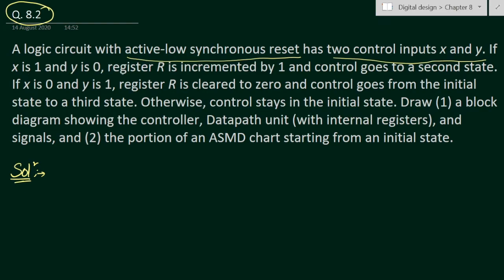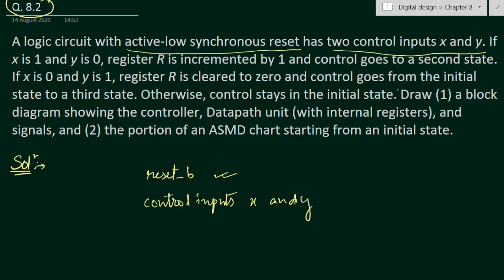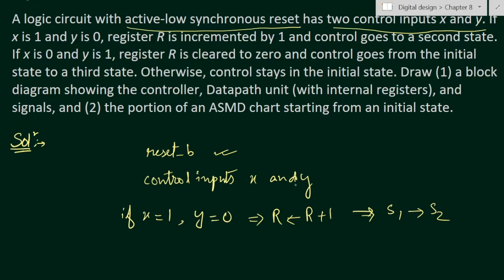If x equals 1 and y is 0, register r is incremented by 1 — that is, r plus 1 is stored in r — and the control goes from the first state s1 to the second state s2.